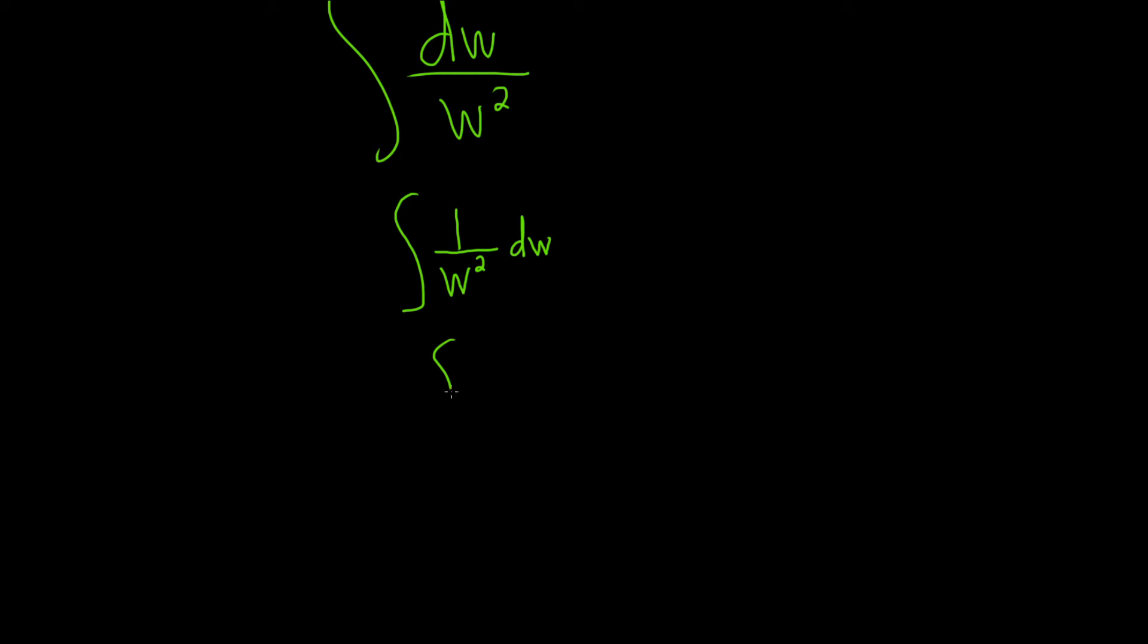So we write the w, and then the positive 2 will become a negative 2. So we have w to the negative 2, dw.